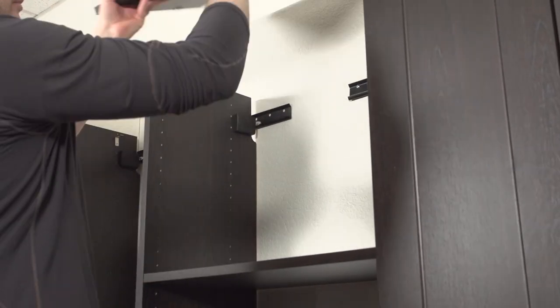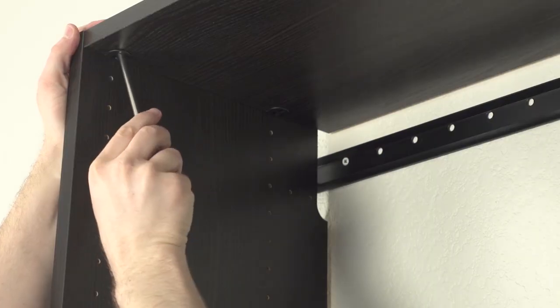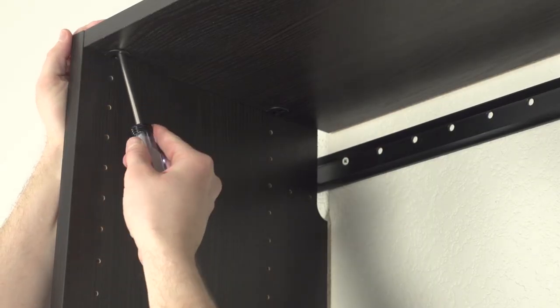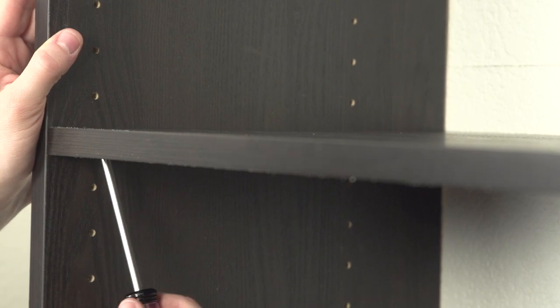Lower the shelves with the installed cam locks onto the installed cam dowels on the uprights. Once seated, secure the shelves with a screwdriver by turning the cam lock a half turn in the clockwise direction. The cam locks are designed to be turned with the screwdriver at a slight angle.